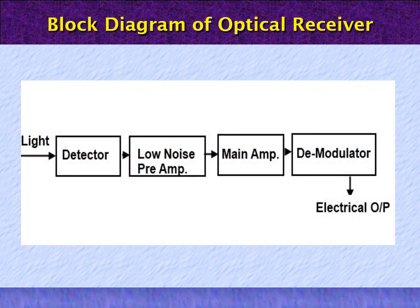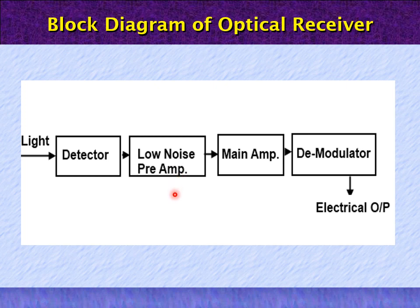Let's see the block diagram of the optical receiver. Once the light is transmitted through the optical fiber, it will be received by the receiver side using the detector. First, the photodiode receives the light signal, then it performs the linear conversion of the received optical signal into an electrical signal. This signal goes to the pre-amplifier stage, as the output of the detector is sometimes small.